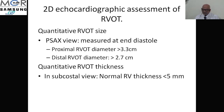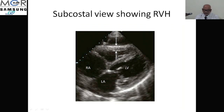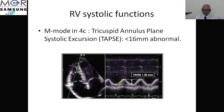For right ventricular volume overload findings, the PSAX view at the RVOT should be taken in short axis. This is the first measurement to assess right ventricular pressure overload. Now let us move to right ventricular systolic function.